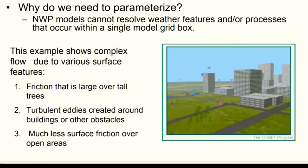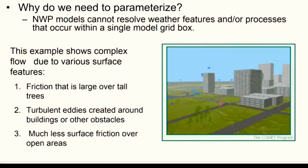Taking into account the effect of sub-grid processes with a single expression that goes into the friction term in the forecast wind equation, without actually simulating them, is called parameterization. There are many complex processes in the atmosphere that need to be parameterized in NWP models, such as radiative processes, cloud processes, and turbulence. The number and type of parameterizations used depend on the model resolution and what the model is to be used for.